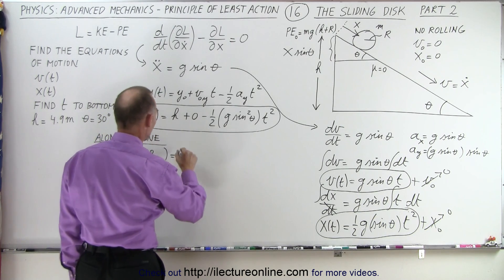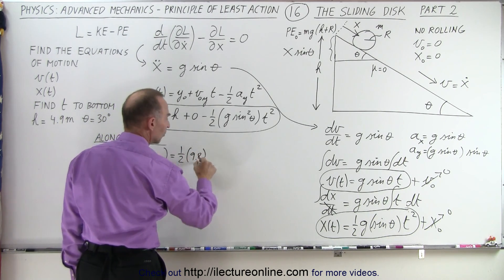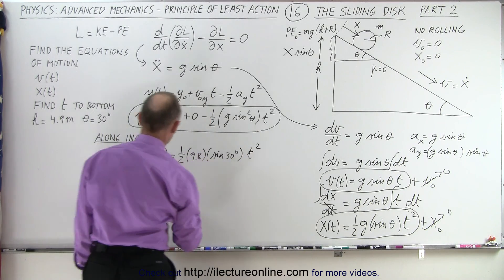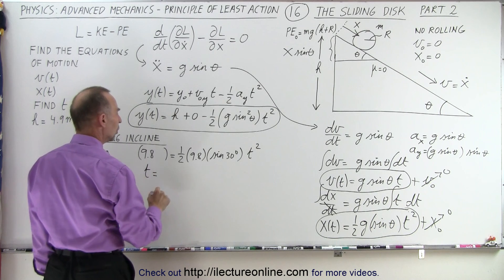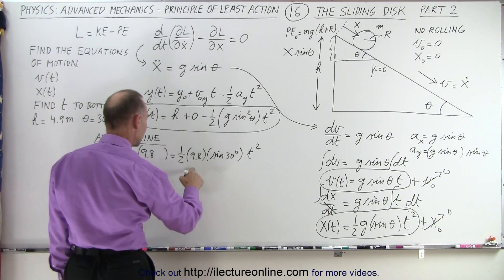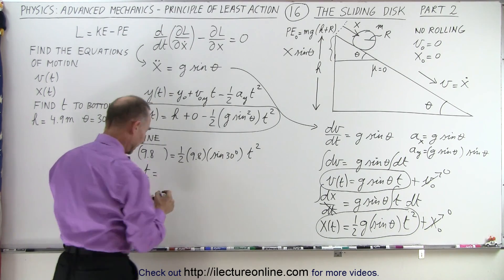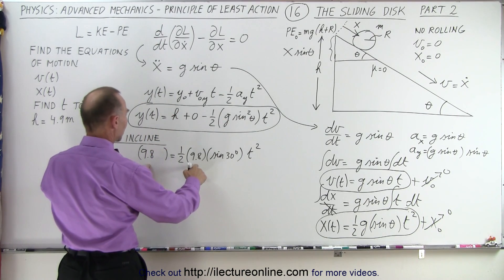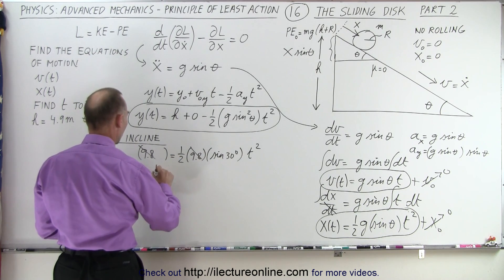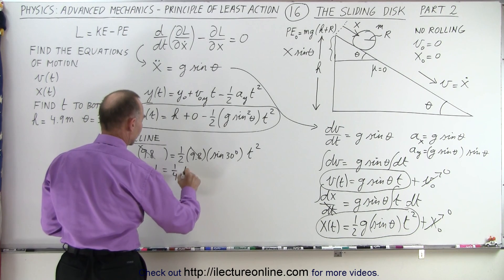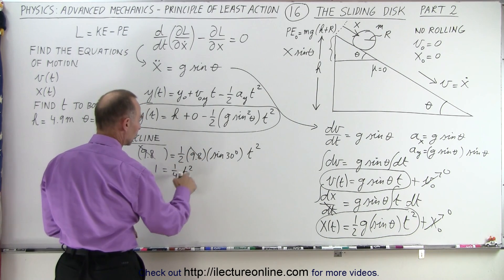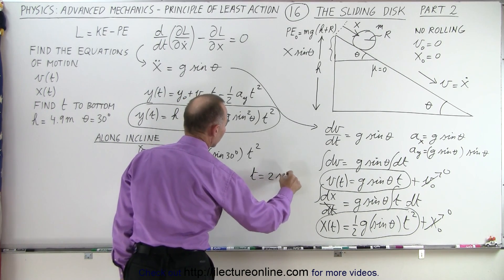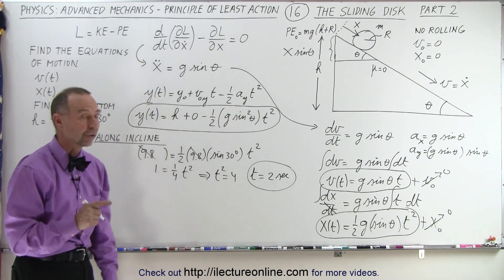So I have 9.8 equals one-half times 9.8 times one-half times t-squared. I can get rid of the 9.8 on both sides, so 1 equals one-quarter times t-squared, because sine of 30 is one-half, and one-half times one-half is one-quarter. Therefore t-squared equals 4, or t equals 2 seconds. So along the incline, it takes 2 seconds for the object to come down.